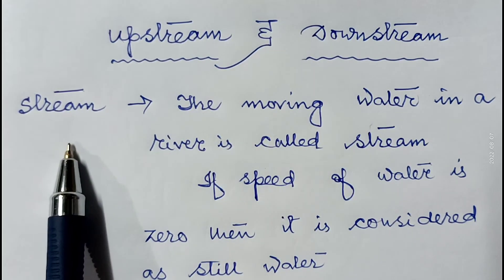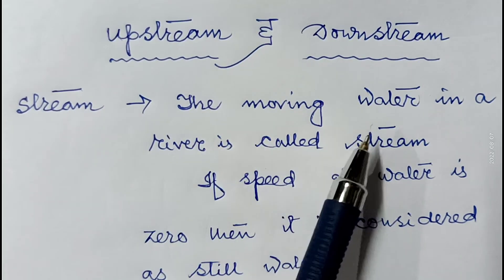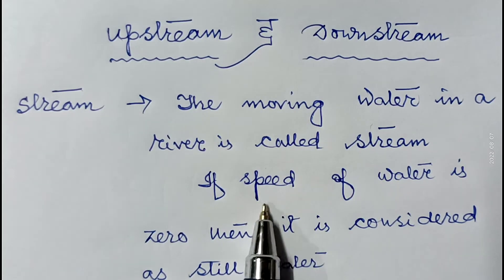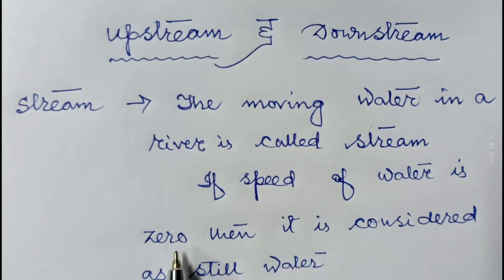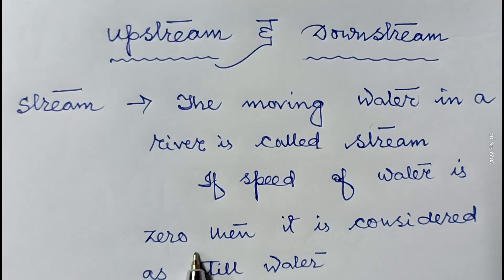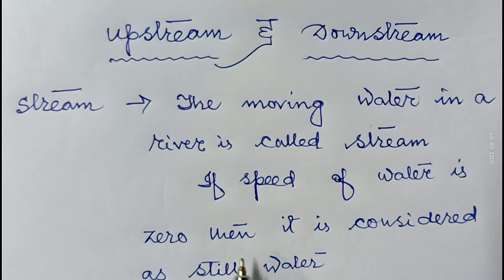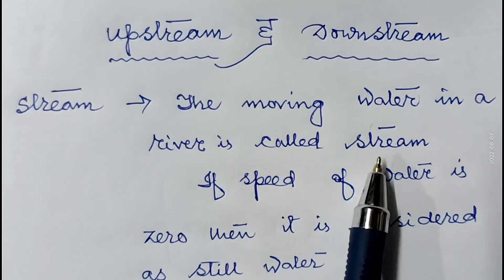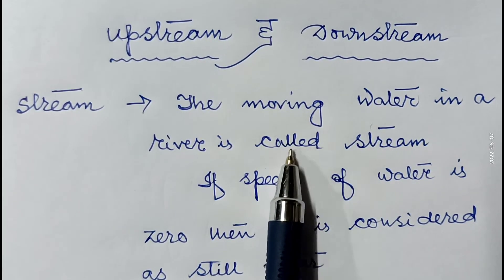Now, what is the stream? The moving water in a river is called a stream. If the speed of water is zero, then it is considered as still water. So sometimes in some situations they may use the term 'still water' — then we have to consider the speed of the water is zero.